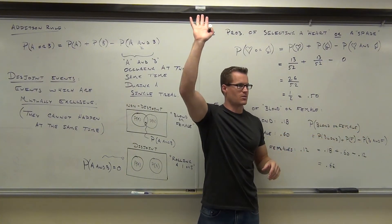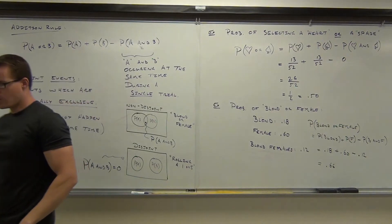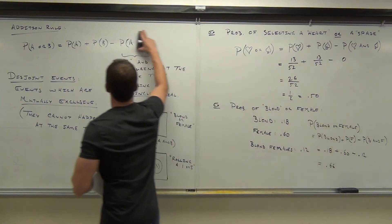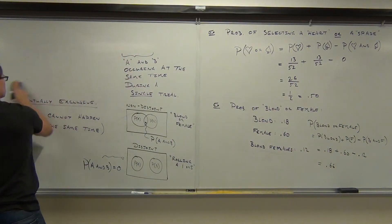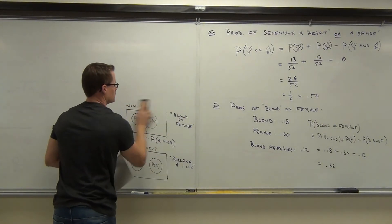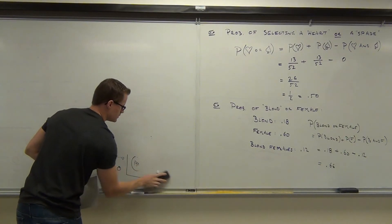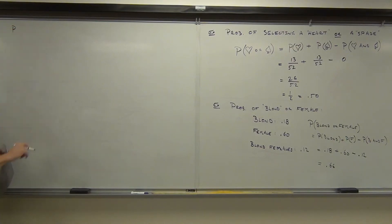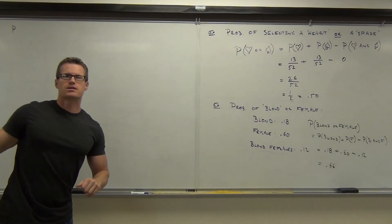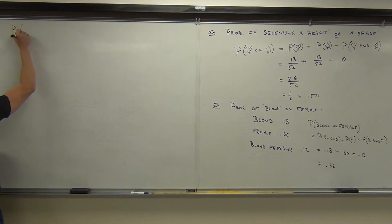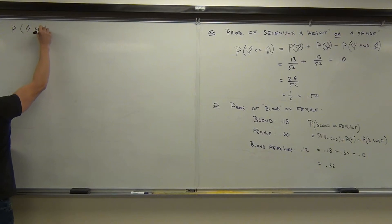Do you understand? How many of you feel pretty good about that? Good. Let's try one more, then we'll do our complementary stuff. We're going to go back to a deck of cards. This is kind of a good one for us. Let's find the probability of randomly selecting out of a deck of cards a diamond or a king.